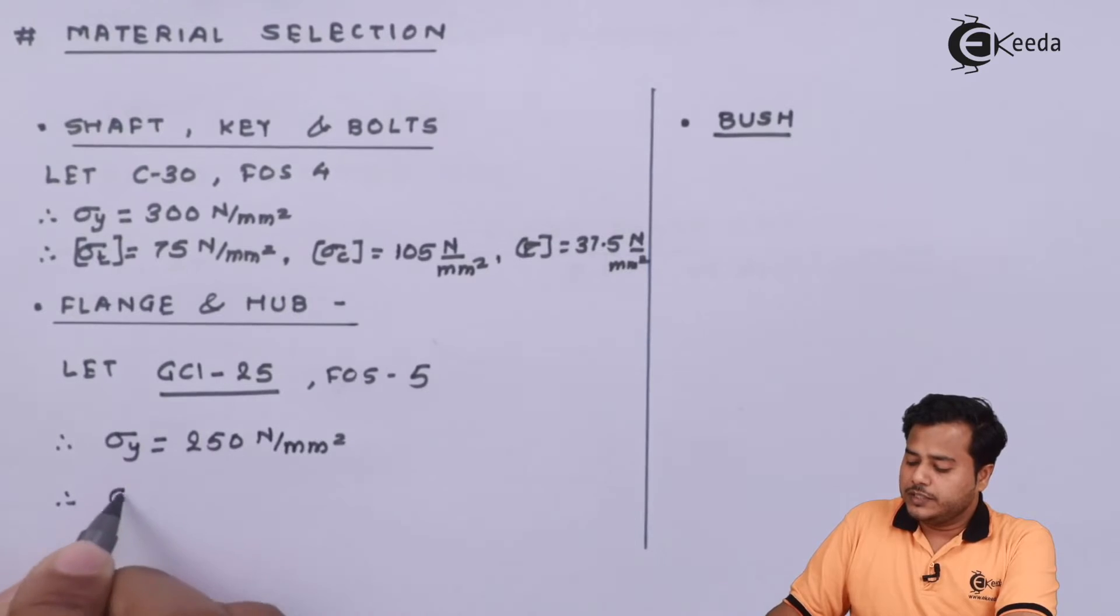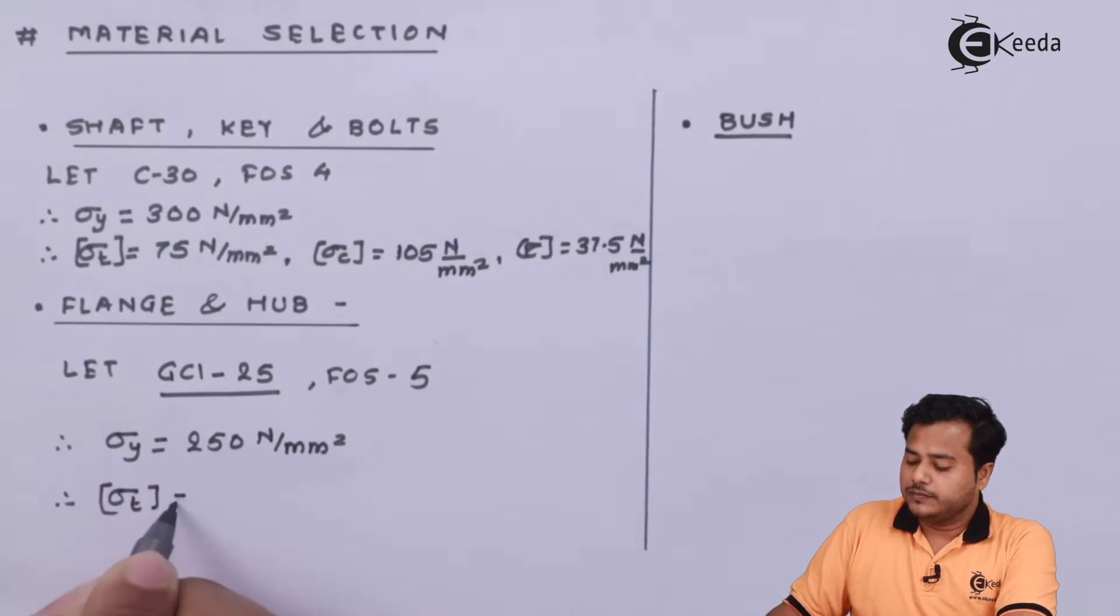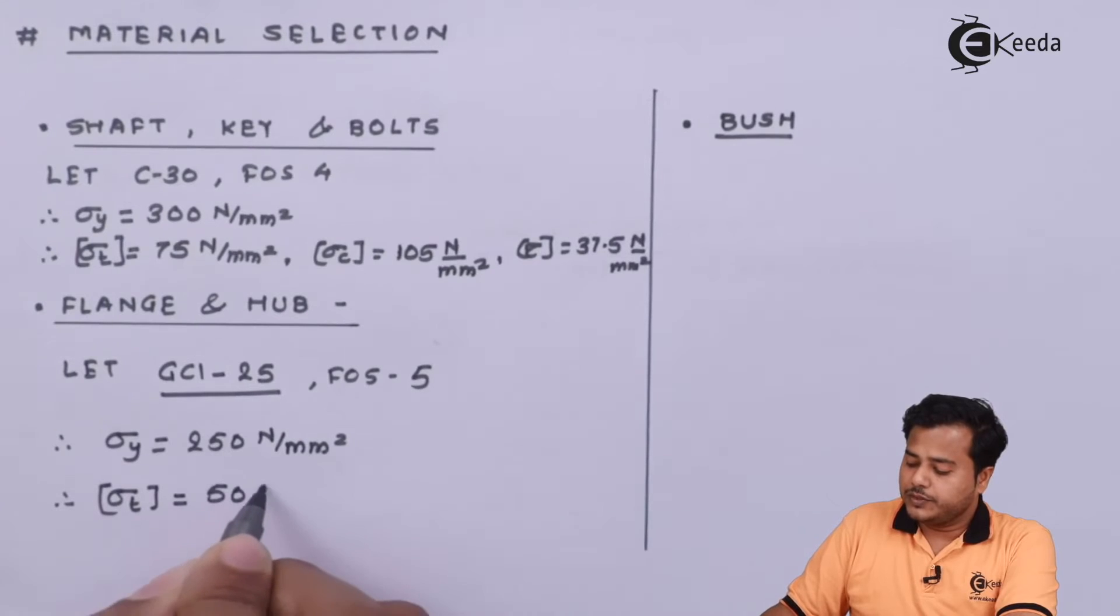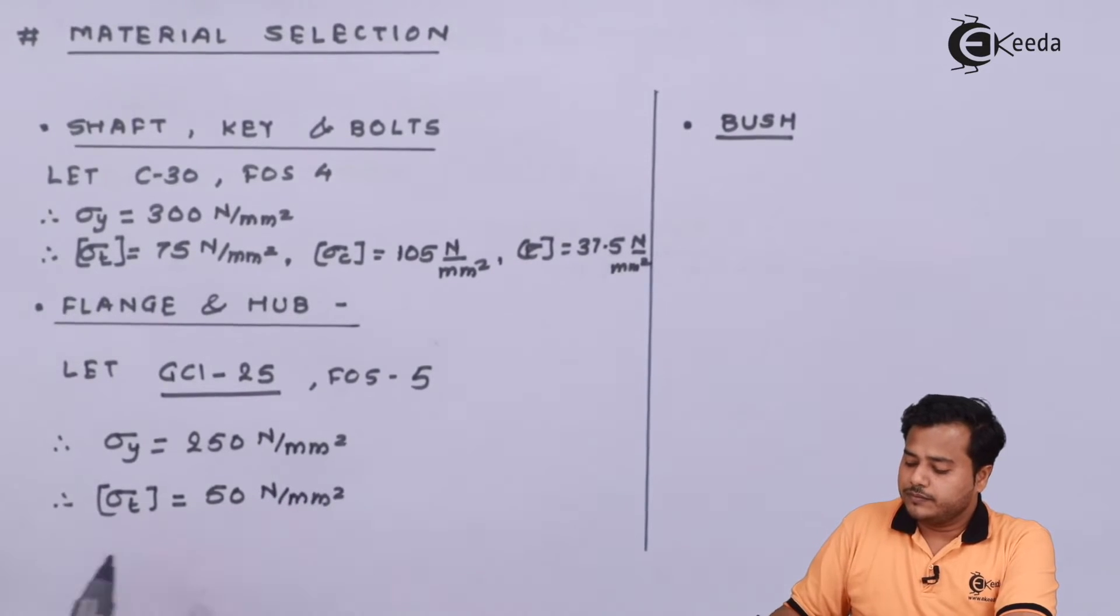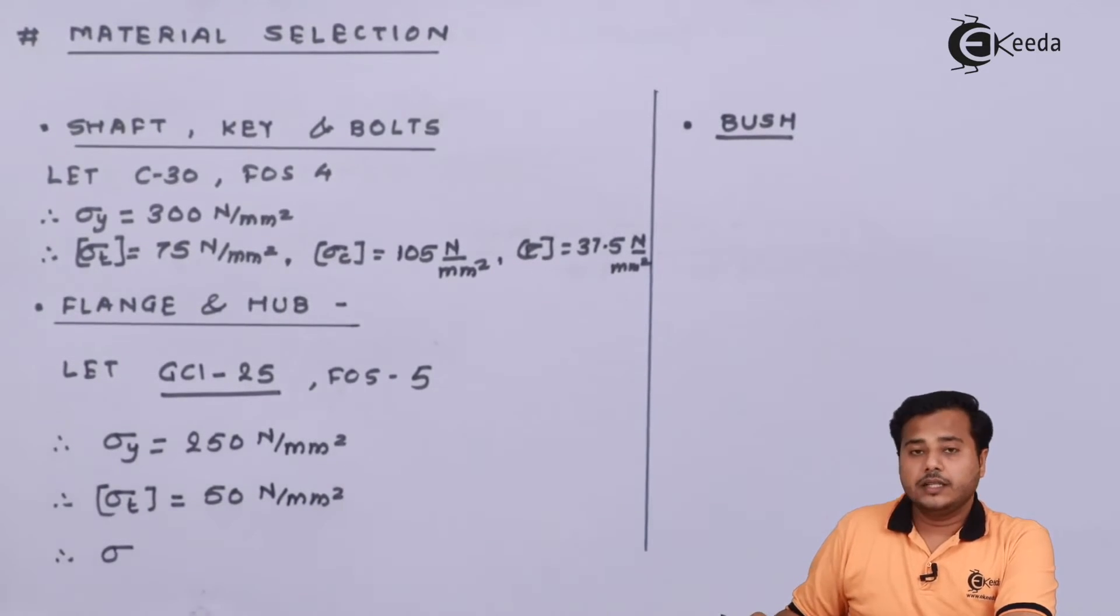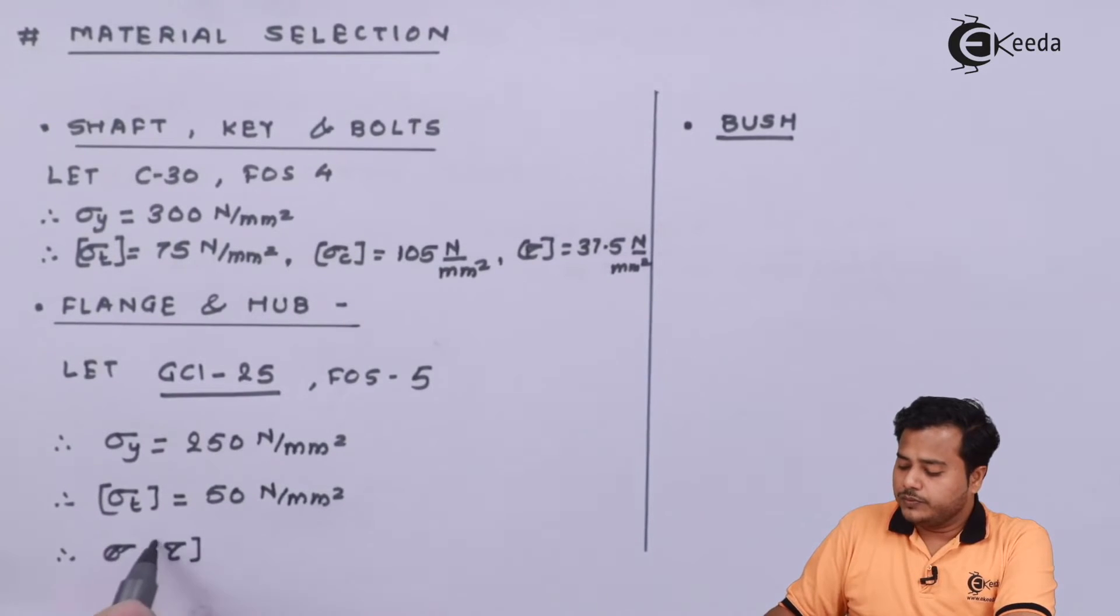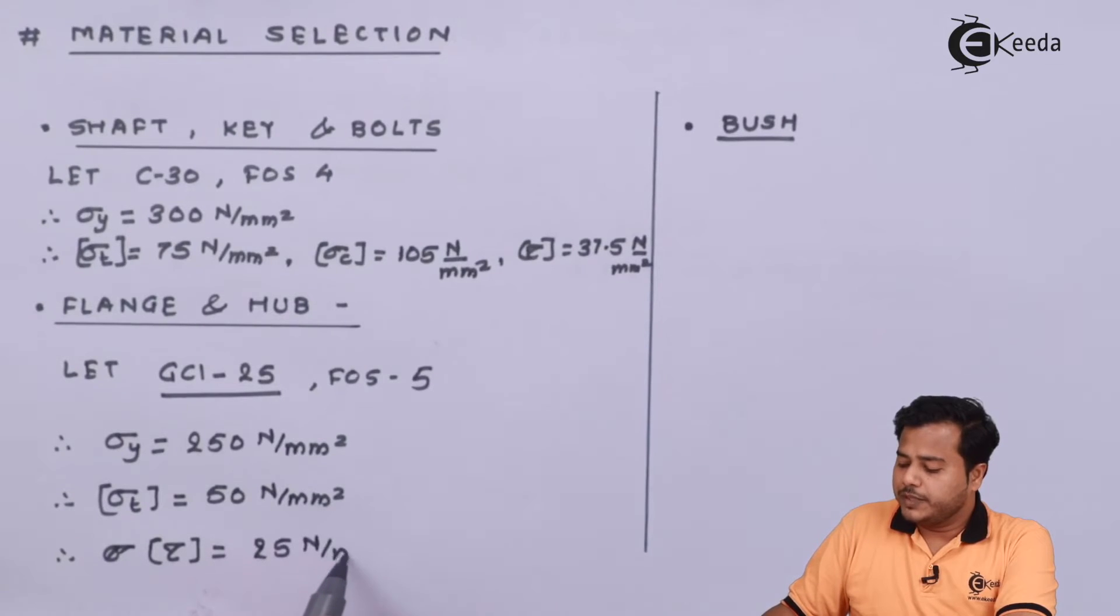And therefore, sigma T is equal to with this factor of safety 50 Newton per millimeter square. And the tau value allowable becomes 25 Newton per millimeter square.